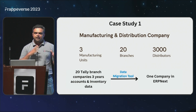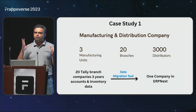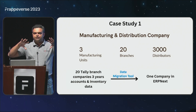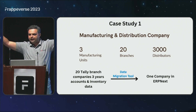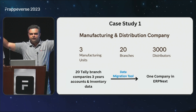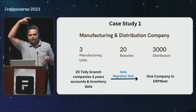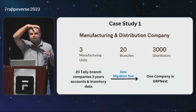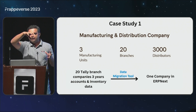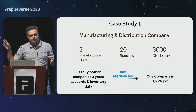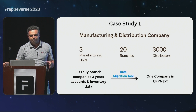They had 20 branches, and one important thing was that all 20 branches' data was in 20 different Tally instances — they were using 20 different Tallys and the data was syncing. What we did is merged the 20 different Tally datasets into one. It's pretty live and they are very happy with it.